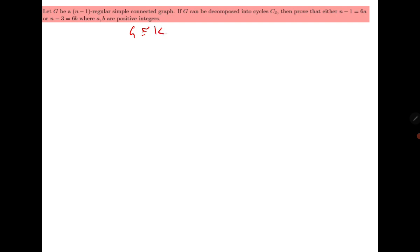Let G be an (n−1)-regular simple connected graph, which means G is Kn. If for some n we decompose G into cycles of length 3, prove that n−1 = 6a, meaning 6 divides n−1 or 6 divides n−3. We need to find the number of cycles in terms of n. In Kn the number of edges is n(n−1)/2.